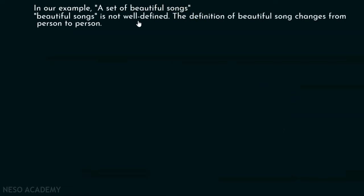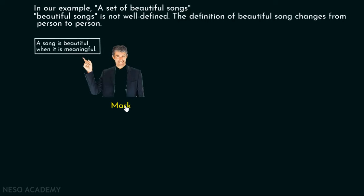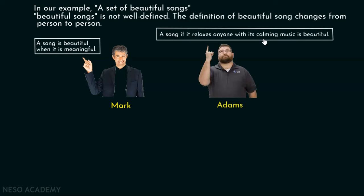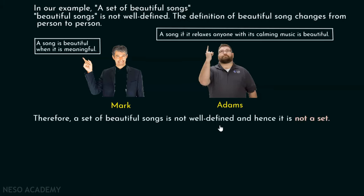In our example, a set of beautiful songs — 'beautiful songs' is not well-defined. The definition of a beautiful song changes from person to person. Mark says that a song is beautiful when it is meaningful. On the other hand, Adam says a song is beautiful if it relaxes anyone with its calming music. These two people have different opinions and their own preferences. Therefore, a set of beautiful songs is not well-defined, and hence it is not a set. A set must be a well-defined collection of objects.